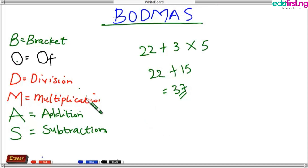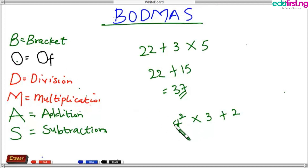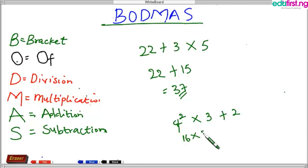Let's take a look at another example. Assume we have 4 raised to the power of 2, then multiply by 3, adding it to 2. Do we have brackets? No. Of — yes! 4 raised to the power of 2 is 16, that is 4 times 4. So we bring down the remaining: 16 times 3 plus 2.